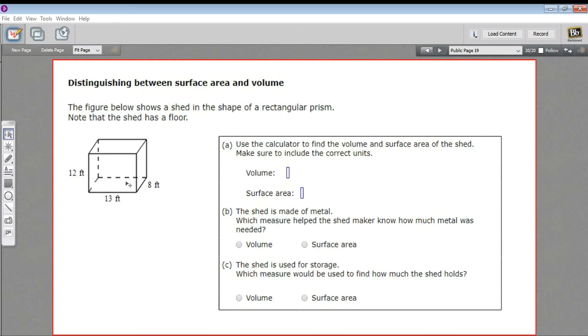In this problem, we need to calculate both the volume and the surface area of a rectangular prism, and then answer some questions about when you'd use one measure versus another. The problem says that the figure below shows a shed in the shape of a rectangular prism. Note that the shed has a floor, so all six sides are going to be taken into account.